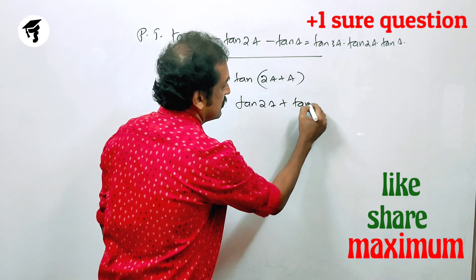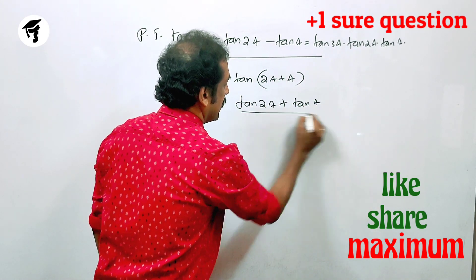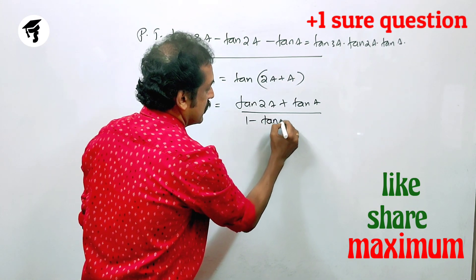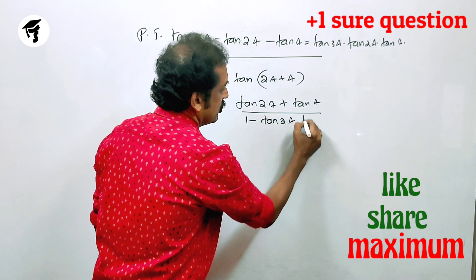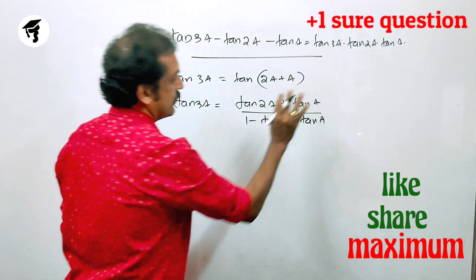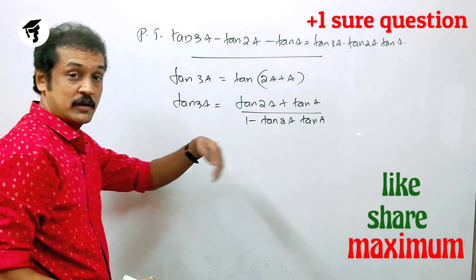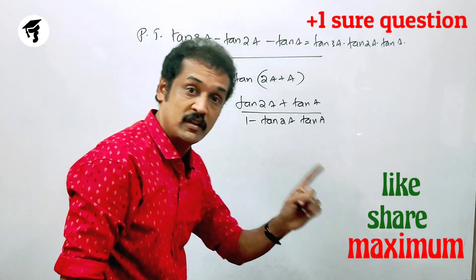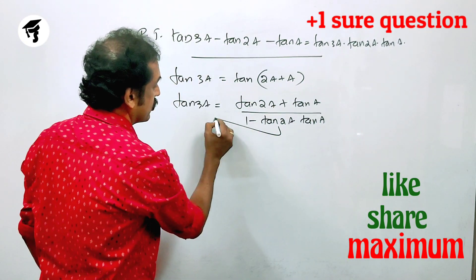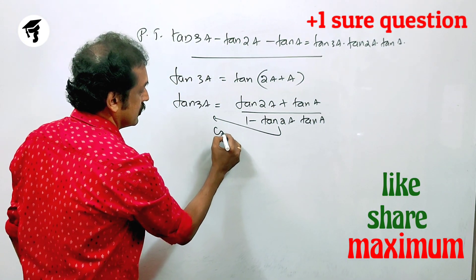tan(2a) plus tan(a) by 1 minus tan(2a) into tan(a). tan(a) plus tan(a). tan(a) plus tan(b) by 1 minus tan(a) tan(b). Next, you have to cross multiply.